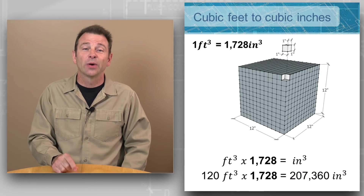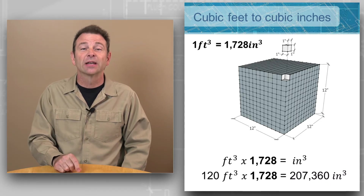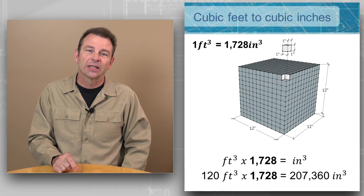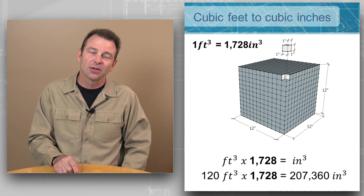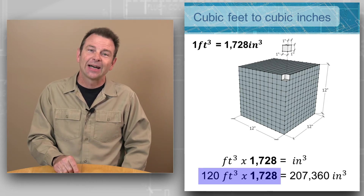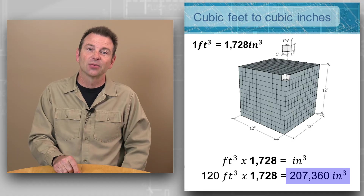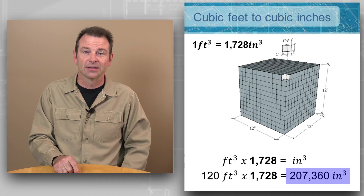Going the other way, we can convert cubic feet to cubic inches. Here's an example: 120 cubic feet times 1,728 equals 207,360 cubic inches.